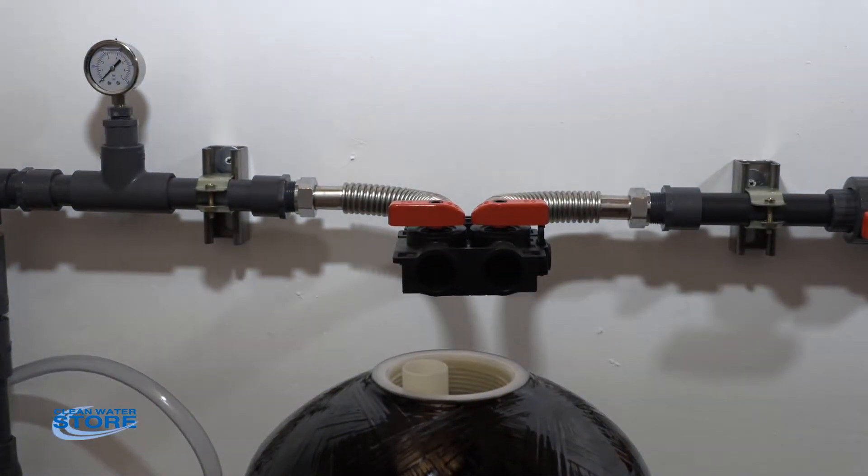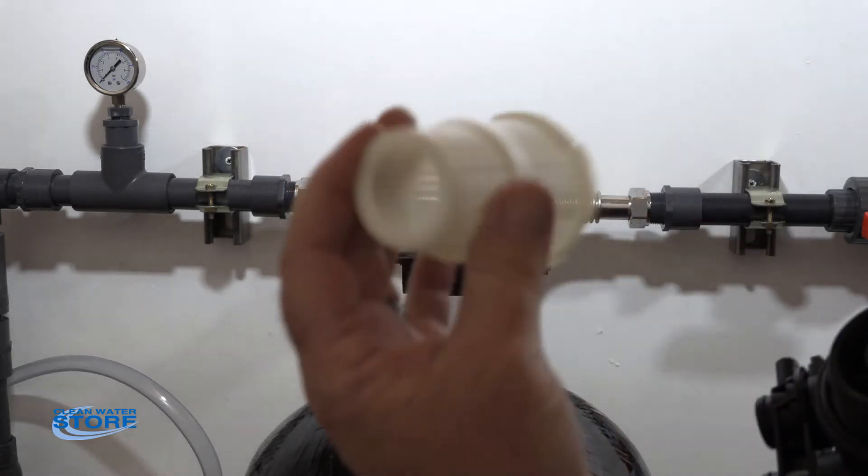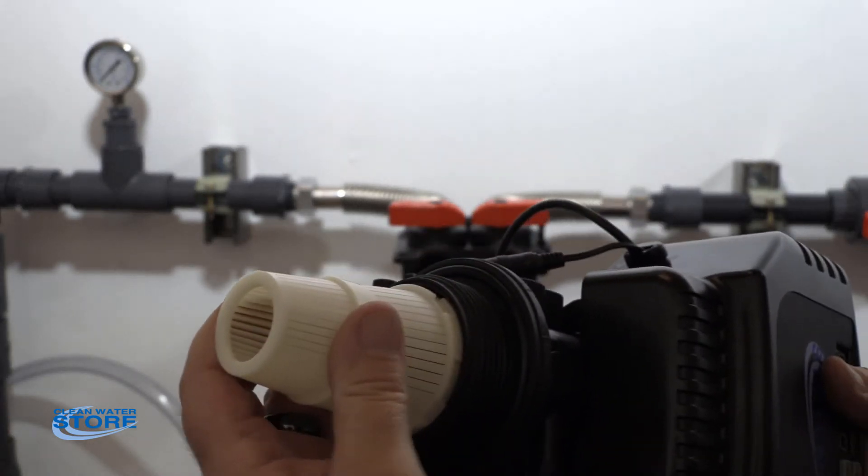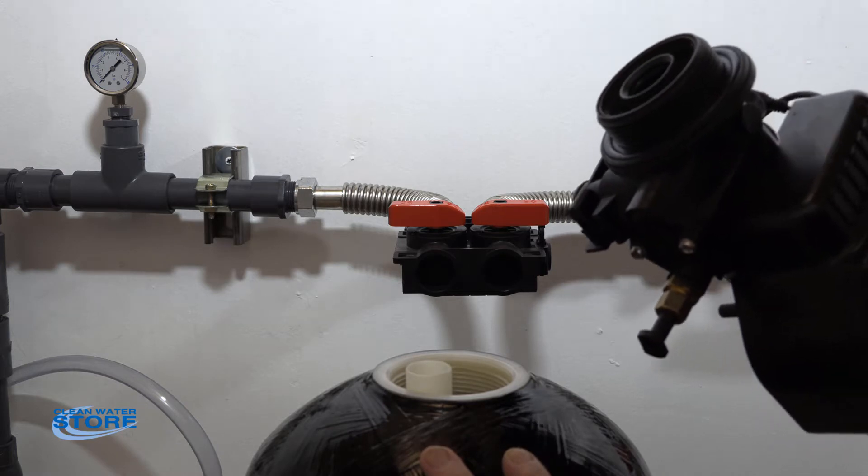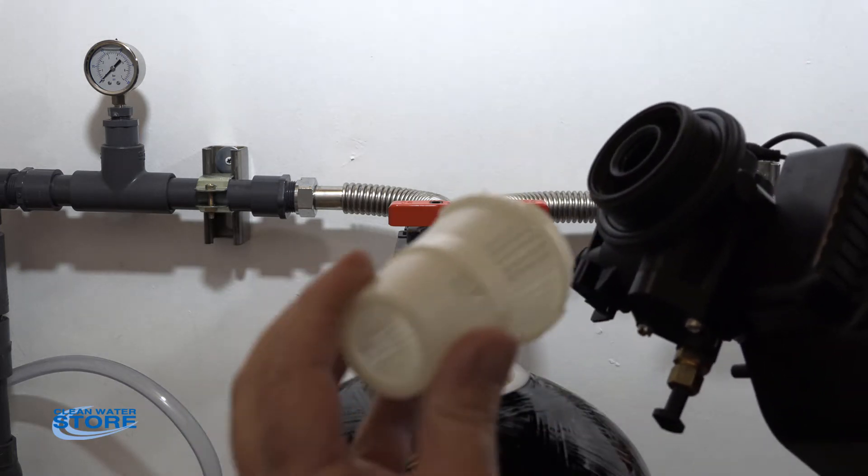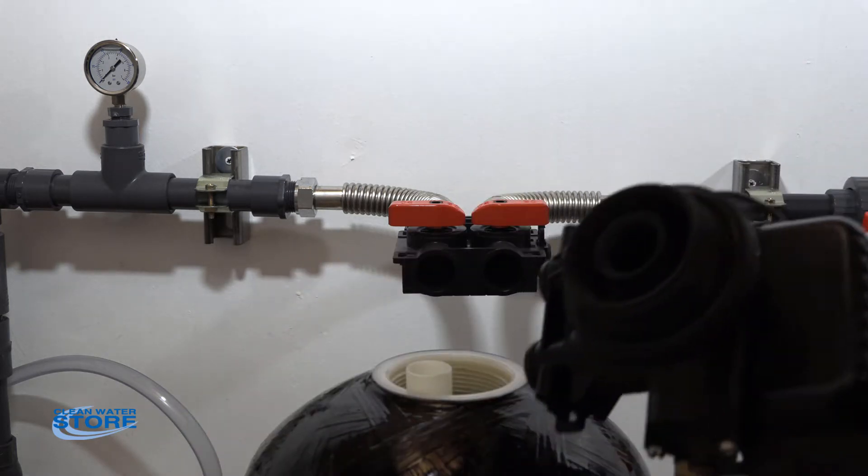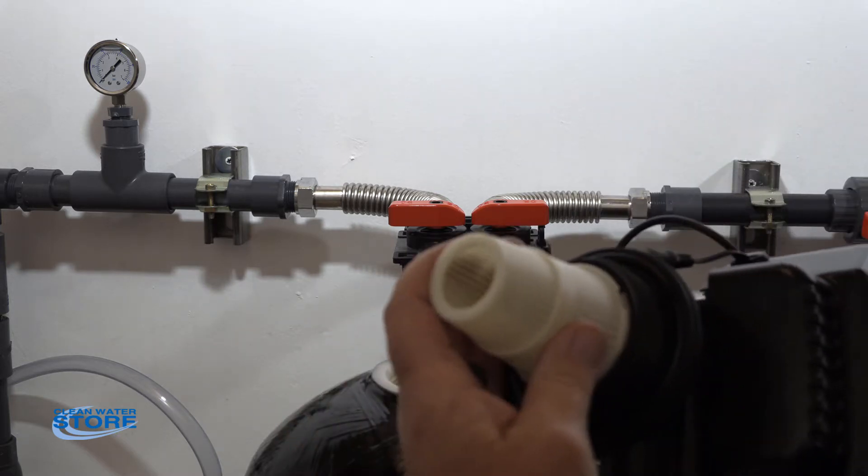Also at this point, I did want to explain something. If you have a ProOx with Chemisorb layer on top or a Chemisorb type filter, you're going to have a top screen that's going to be on the valve. For this purpose, we're assuming this is a carbon setup for this particular one, so you would not have the top screen. But if you had the ProOx or the Chemisorb, you would have a top screen on there.